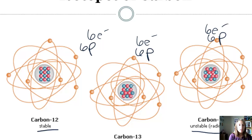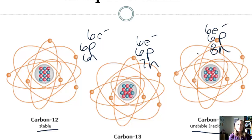Now let's look at the neutrons, shown in red. The first isotope has 6 neutrons, the second has 7, and the third has 8. So the numbers of neutrons are different — that's why these are isotopes. You may be wondering where 12, 13, and 14 come from: if you add up the number of protons and neutrons, you get 12 for the first, 13 for the second, and 14 for the third.